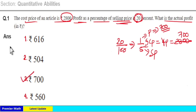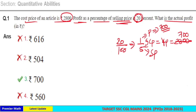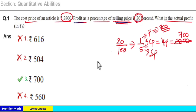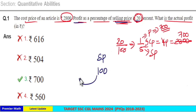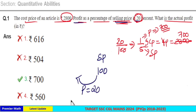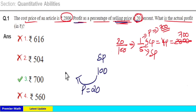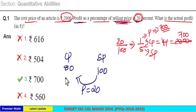Option 3 is your answer. If you want to do it by a different method, you can also do it this way. Profit is 20% of selling price, so take selling price as 100 rupees. Profit equals 20% of 100, so profit is 20 rupees. Selling price minus profit equals cost price: 100 minus 20 equals 80 rupees. But here 80 rupees is given as 2800.